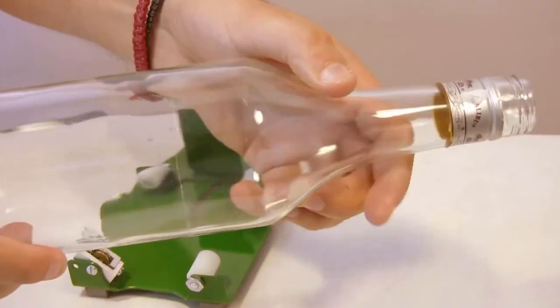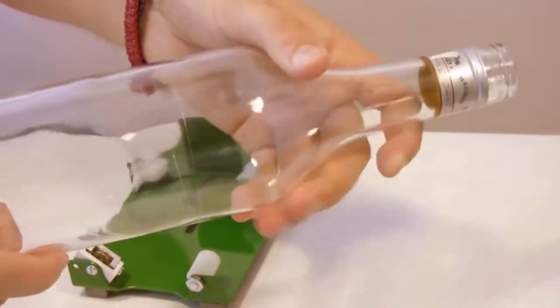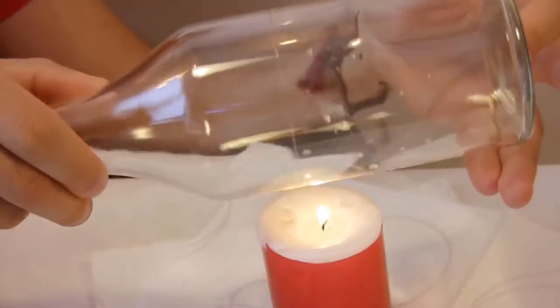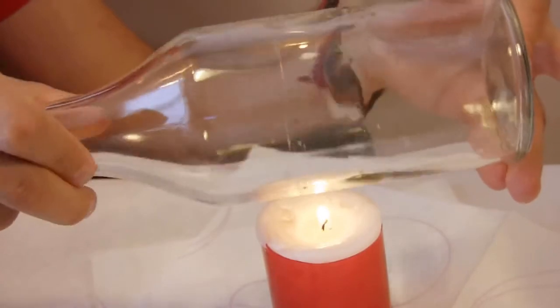Heat the scoring line on a candle and cool it down with ice. And again, repeat the procedure until the bottle splits in two pieces.